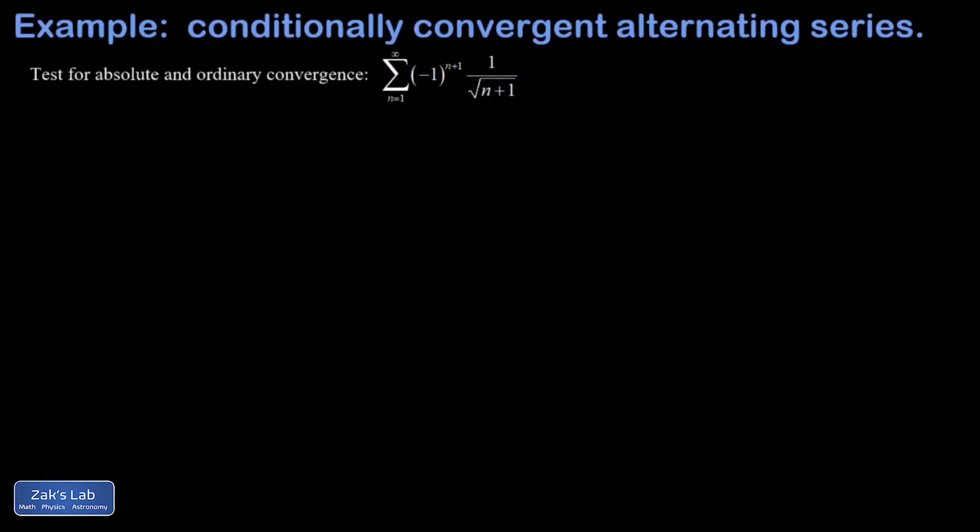In this video, we're investigating the convergence of an alternating series. Ordinarily, the first thing you do is look for absolute convergence, because if you can prove that, it automatically means that ordinary convergence is going to happen.